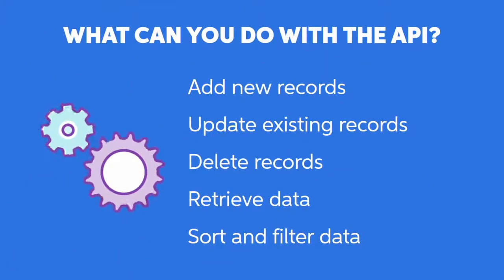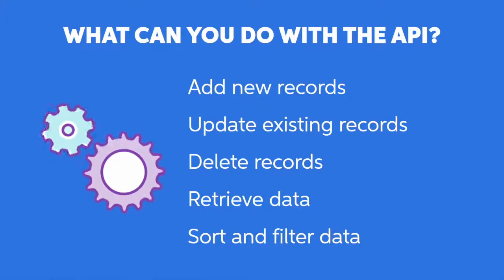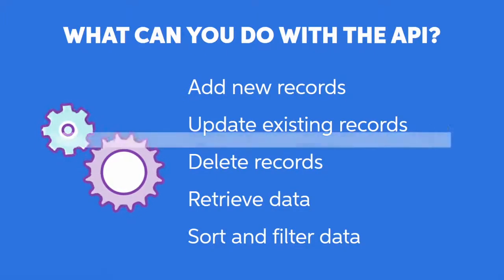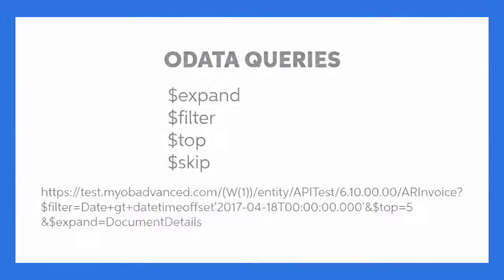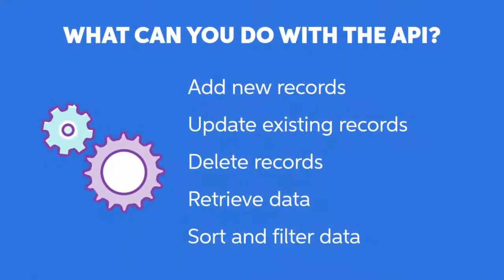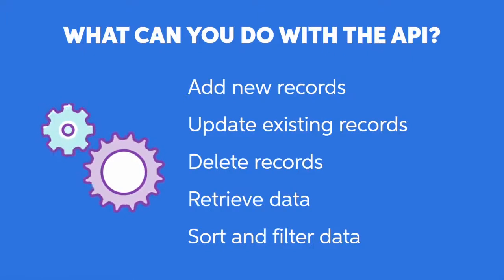The Advanced API comes with all the features you'd expect from a modern API, providing the ability to create new records and update existing ones, delete records, and retrieve data, sorting and filtering as necessary. The REST API follows the OData protocol for querying data with parameters like Expand, Filter, Top and Skip. The powerful extension mechanism ensures that all the entities in the MYOB Advanced system can be exposed via the API, and all of these custom and extended endpoints can be easily ported between different MYOB Advanced sites.